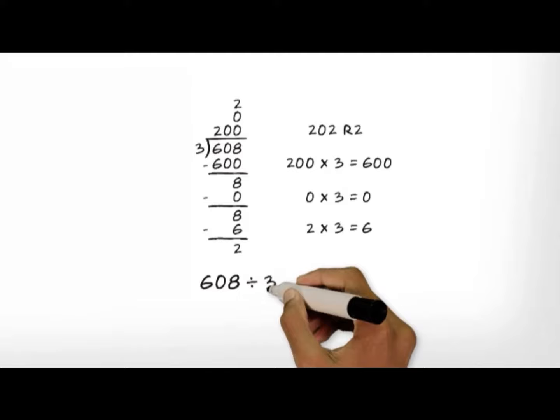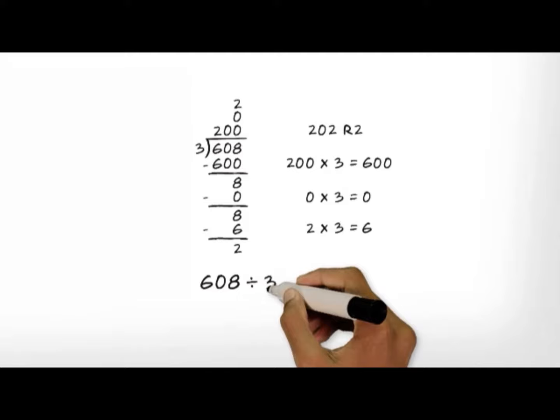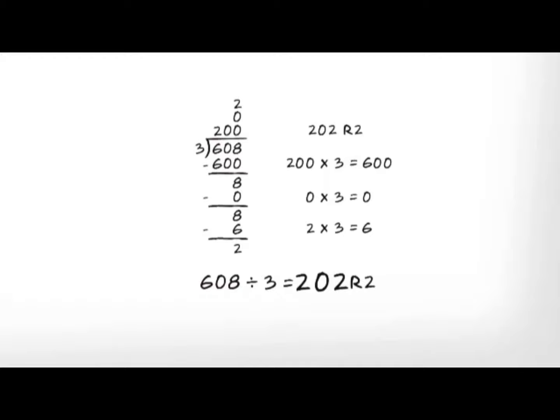We now write the division equation. 608 divided by 3 is equal to 202 remainder 2, and we are done! This means that 608 students divided into 3 concerts is 202 students at each concert, with 2 students left over.